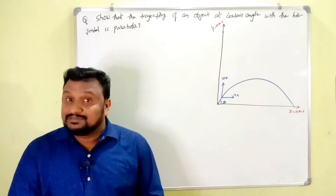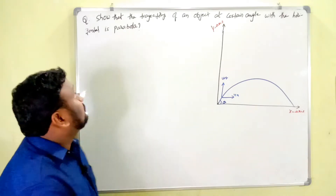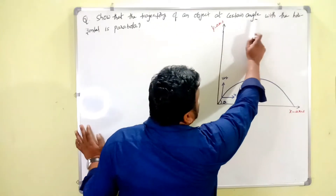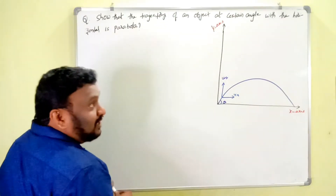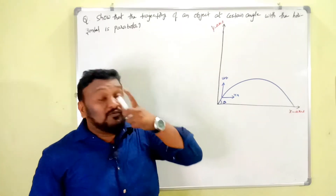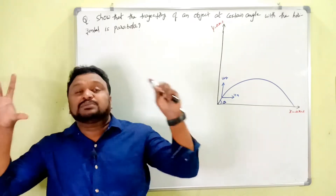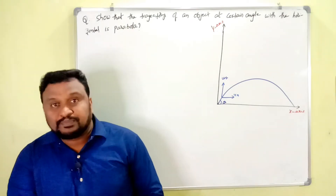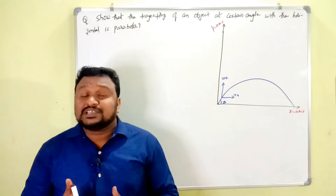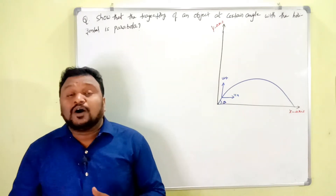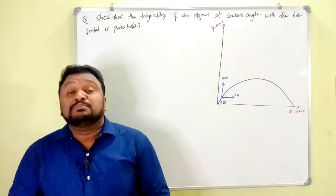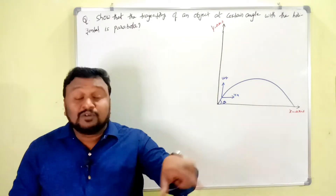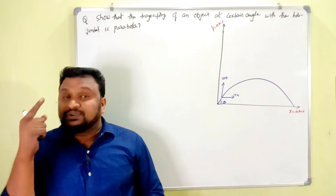The question is from the chapter Motion in a Plane: show that the trajectory of an object projected at a certain angle with the horizontal is a parabola. This is a four-mark question repeated many times in public examinations, useful for both AP and TS. A projectile is any object projected into the air at some angle with the horizontal that reaches the ground in a parabolic path.